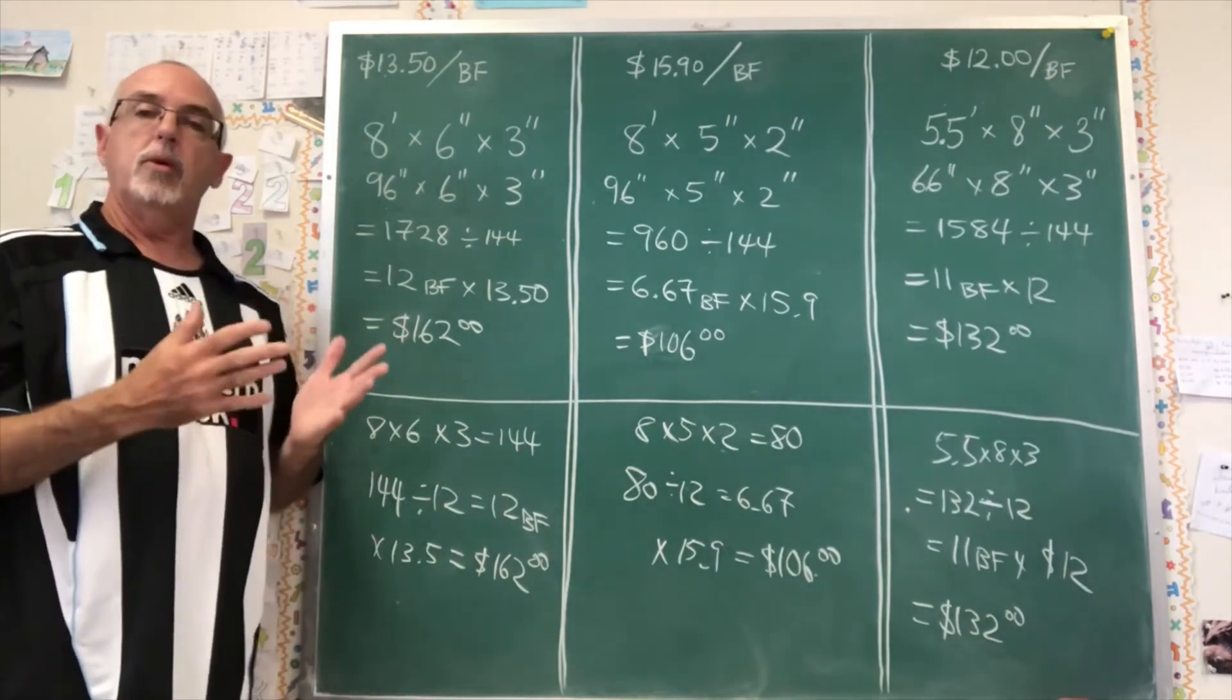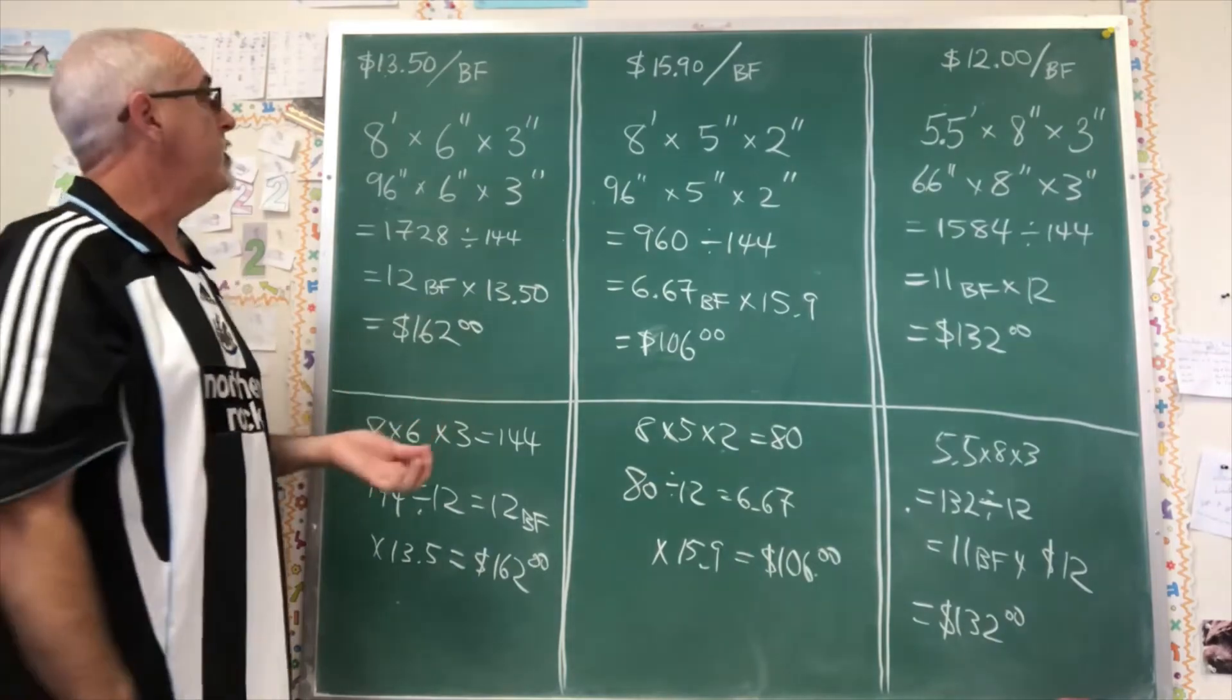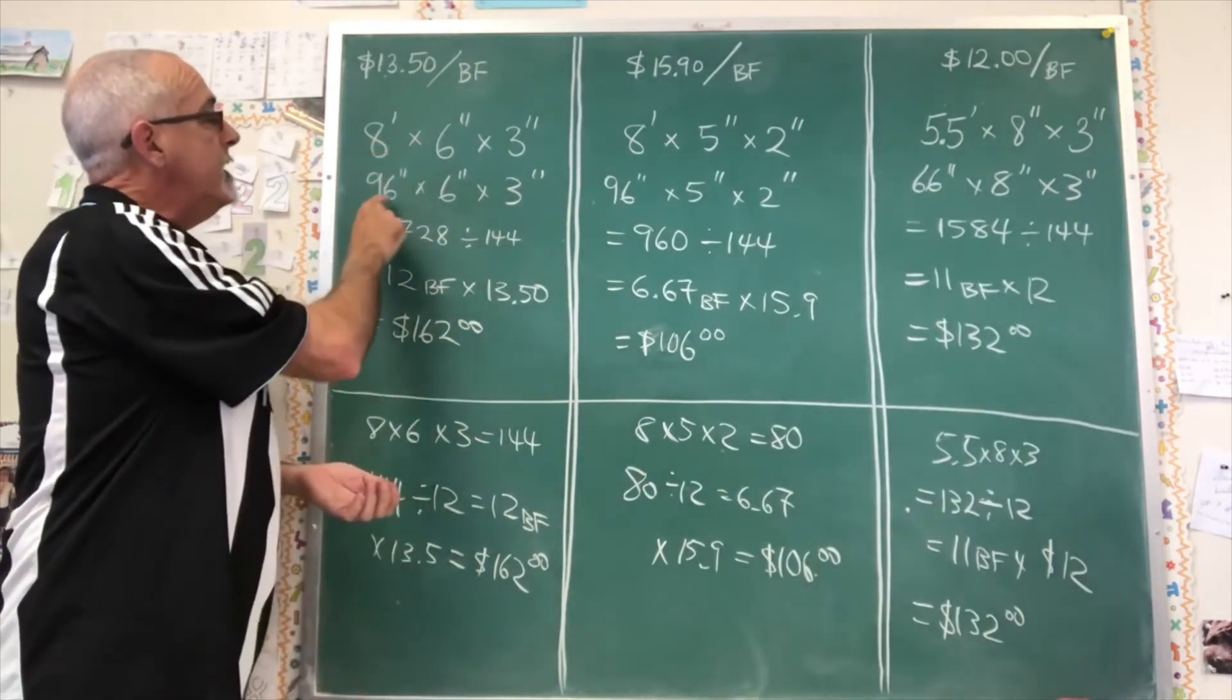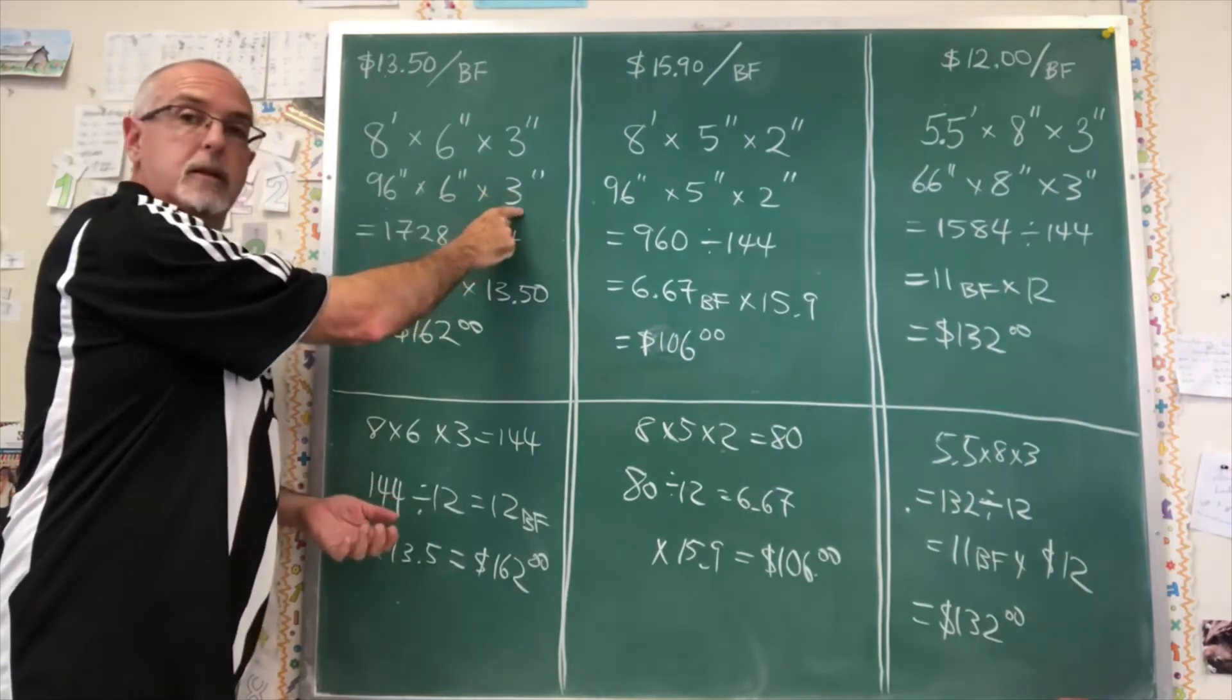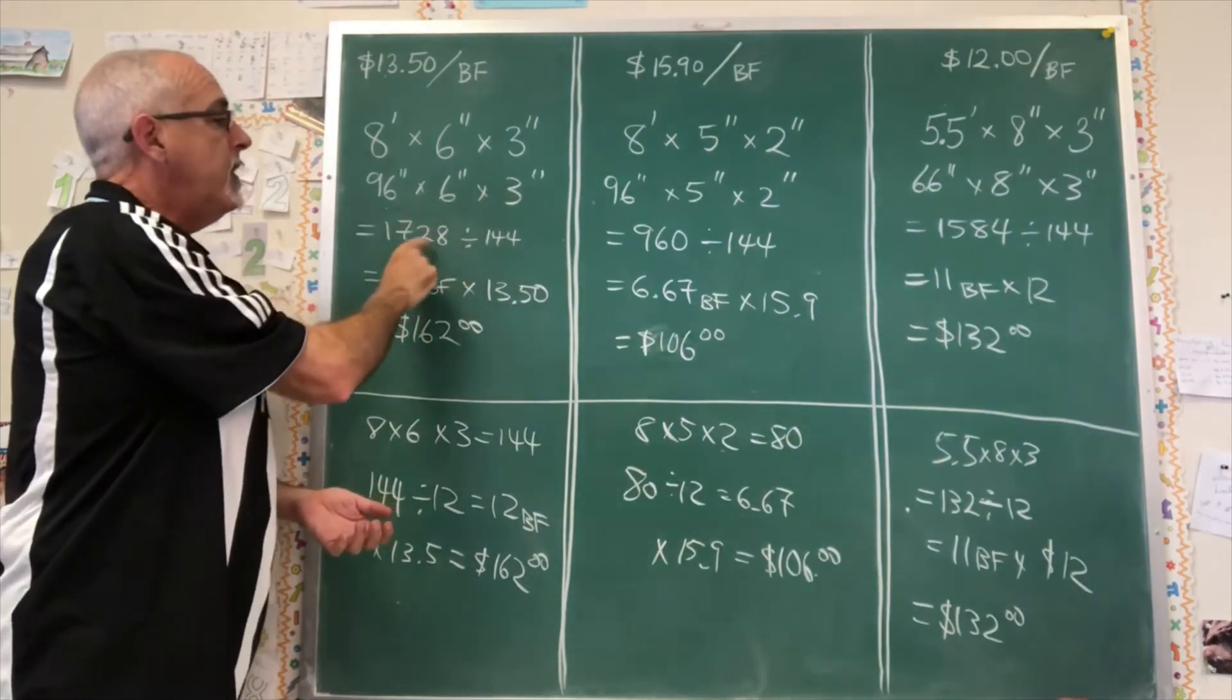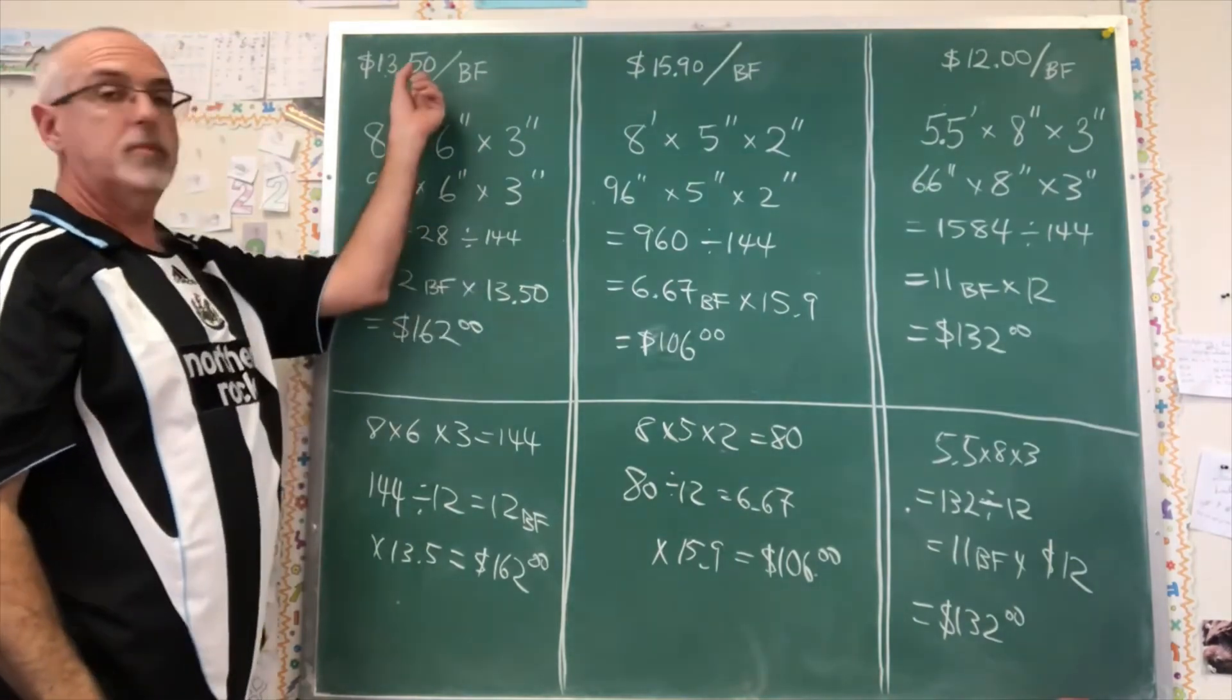So the appropriate way of calculating the cost of wood that's sold by the board foot is to multiply its length in inches by its width in inches and its thickness in inches, divide the answer by 144, and then multiply the answer to that by the cost per board foot.